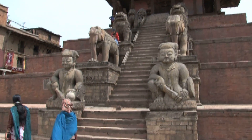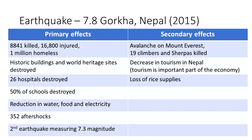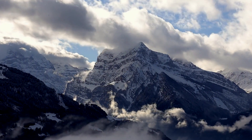There was destruction of 26 hospitals and many schools — if all the hospitals are destroyed there's nowhere to help the injured. There was also a shortage of water, food, and electricity, and lots of aftershocks which caused a lot more damage.